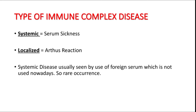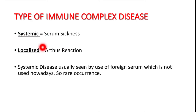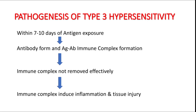Once they get deposited, they elicit inflammation and tissue injury, and the patient will manifest symptoms according to the organ involved. If the patient has involvement of many organs like joints and kidney, it is systemic — known as serum sickness. If the reaction is localized, it is known as Arthus reaction. Systemic serum sickness is very rare nowadays because foreign serums are not commonly used.